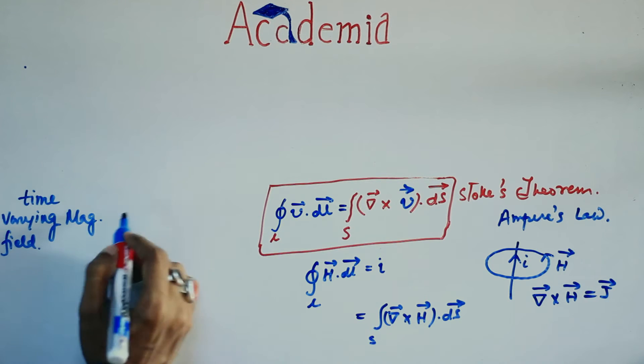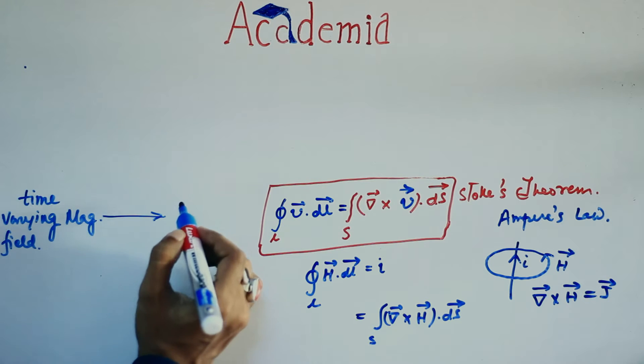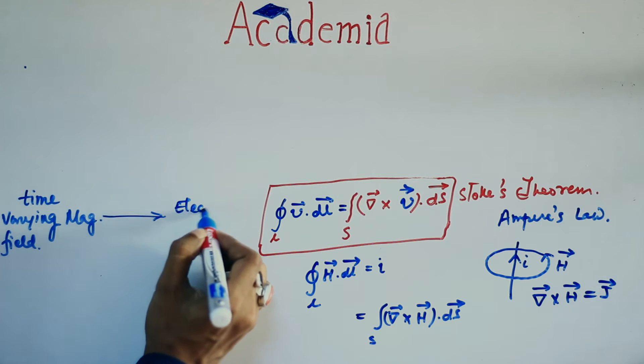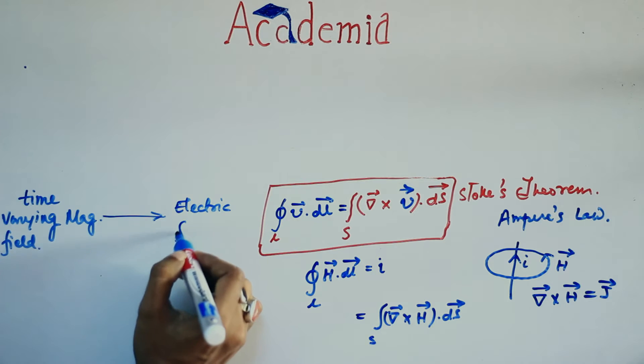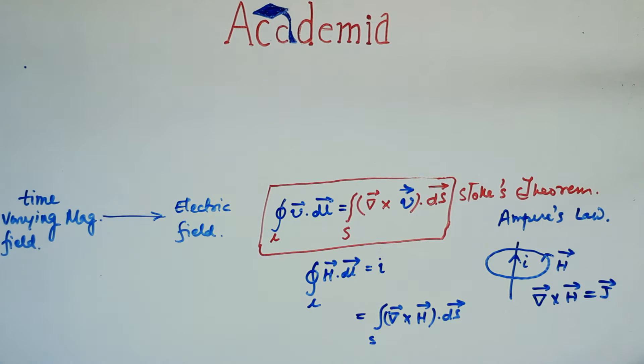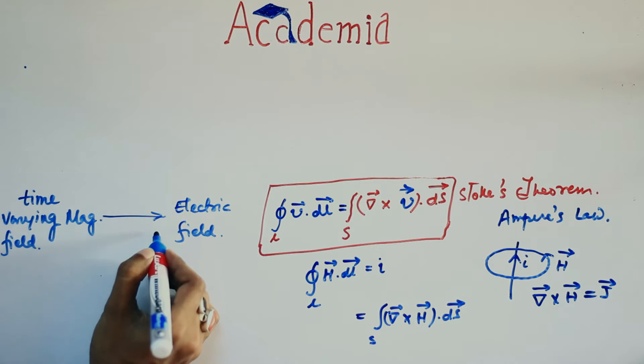Let's see how he predicted it. He already knew that Faraday stated time-varying magnetic field produces electric field. Maxwell simply proposed that the converse is also true.